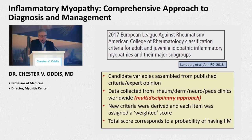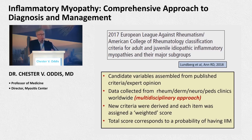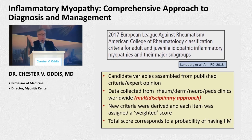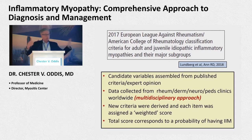Candidate variables are assembled from published criteria. Data is collected from many different disciplines — not just rheumatologists, but dermatologists, neurologists, and pediatric clinics — in a worldwide, multidisciplinary approach. Criteria were derived and each item was assigned a weighted score. For example, in lupus, nephritis carries more points than oral ulcers. You get a total score that corresponds to the probability of having myositis — IIM, idiopathic inflammatory myopathy.